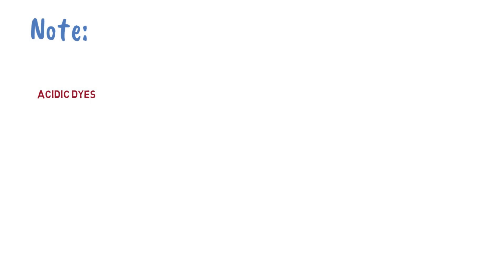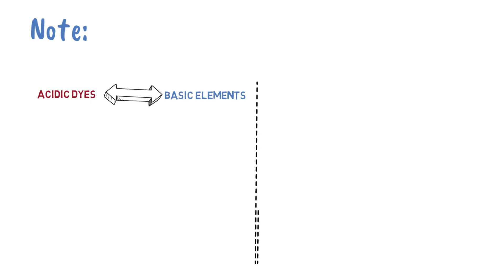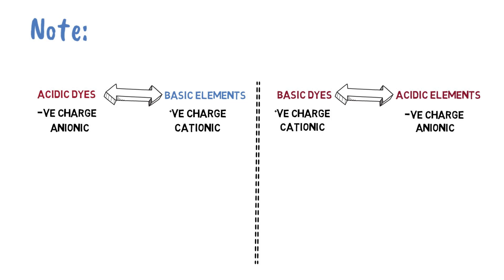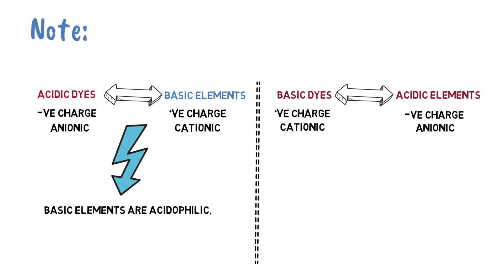To clarify one idea: acidic dyes will interact with basic structures or elements, and basic dyes interact with acidic elements. Remember that acidic means negatively charged or anionic structures, and basic means net positive charge or cationic structures. That is, basic structures are called acidophilic because they bind or stain with acidic dyes, which are negatively charged.